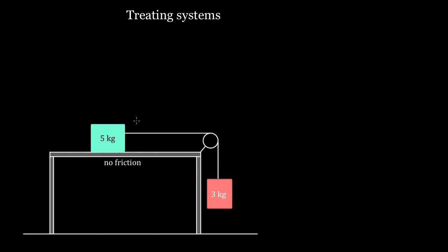This problem is a classic — you're gonna see this in basically every single physics textbook. The problem is this: if you've got two masses tied together by a rope, and that rope passes over a pulley, what's the acceleration of the masses? Specifically, what's the acceleration of the three kilogram mass, and what's the acceleration of the five kilogram mass?